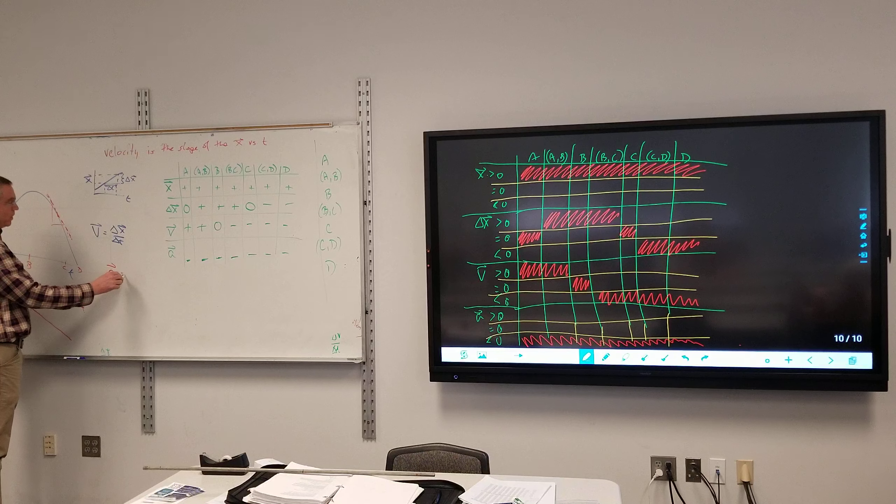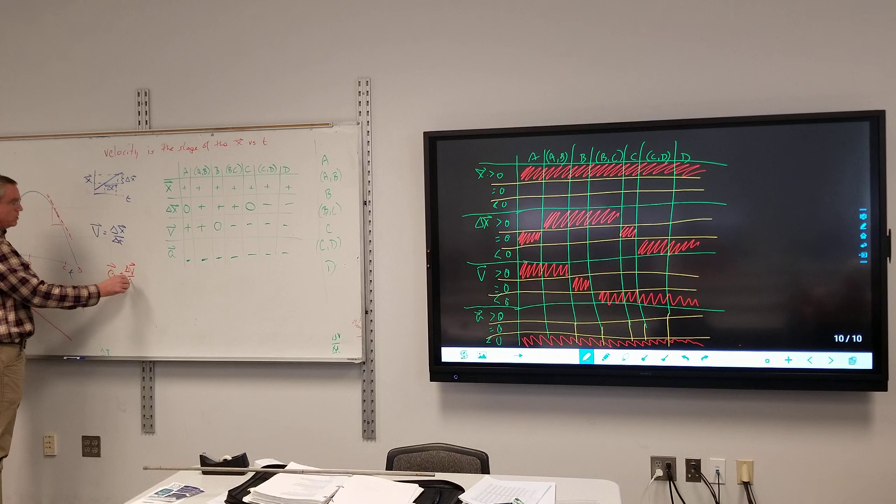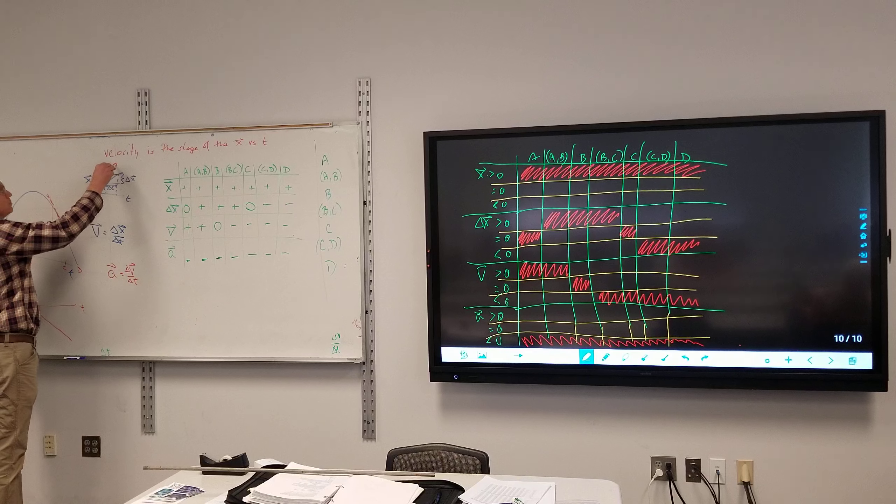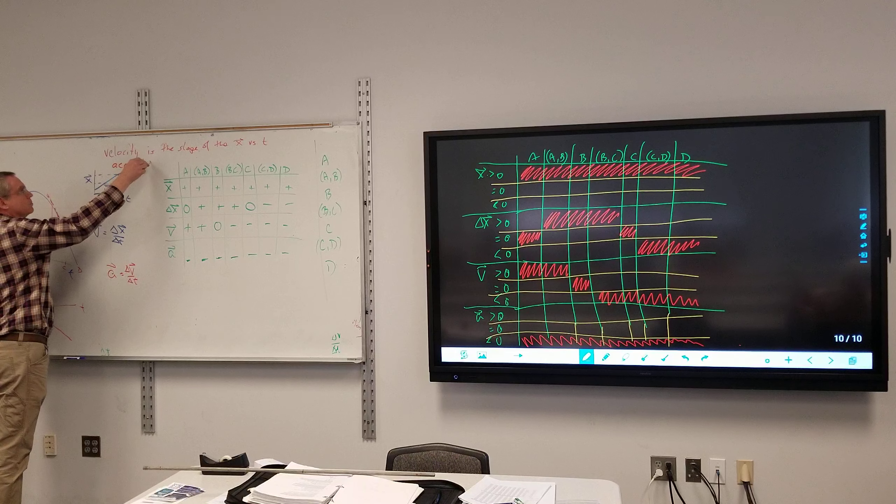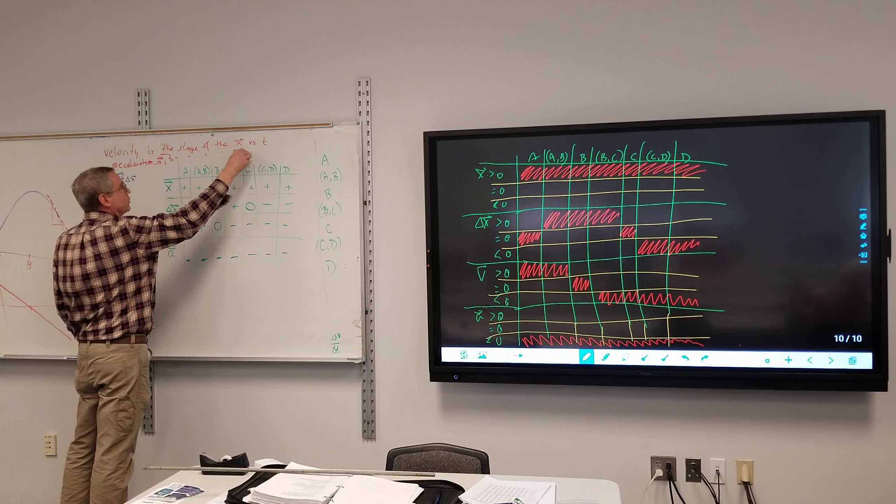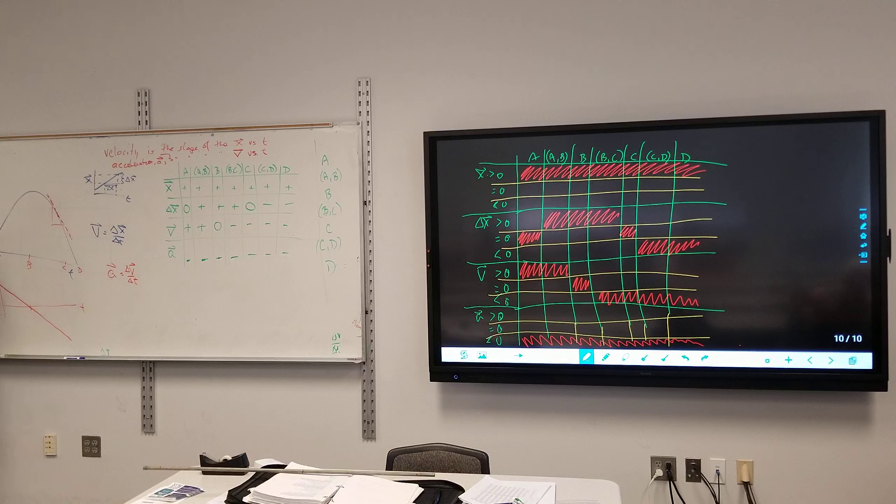Acceleration versus time. Acceleration is the change in velocity over the change in time. So if I have a velocity time graph, what is my acceleration? It's the slope again. Acceleration. It is the slope of the velocity versus time graph. Well, my slope is constant here, so my acceleration versus time graph, well it's just going to be negative the entire time.